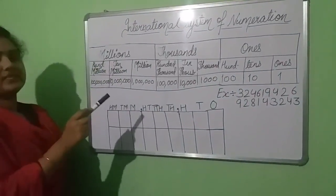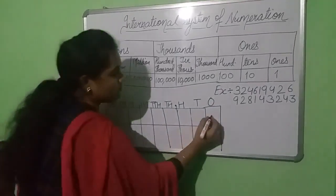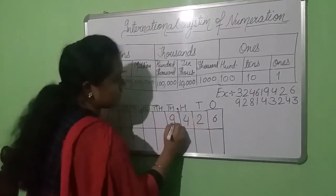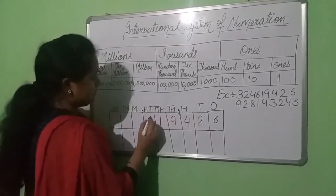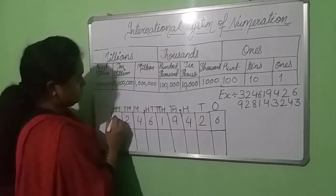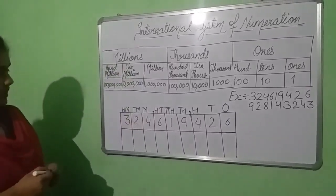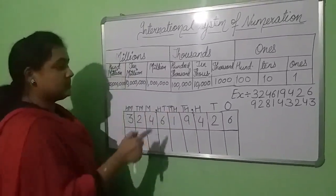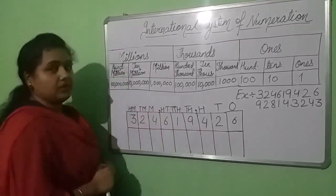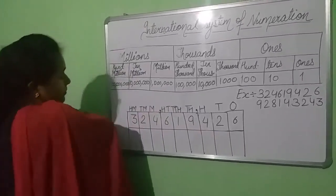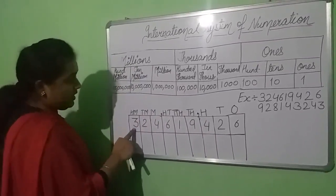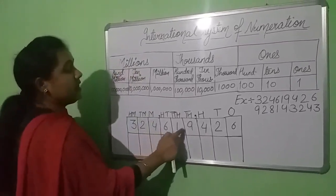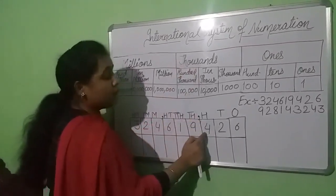Let's place this number in the place value chart: 1, 6, 2, 4, 9, 1, 6, 4, 2, 3. I have put the commas in which separate the periods. It will help us to read this number. Now, how can we read this number? We can read this number as 324,619,426.